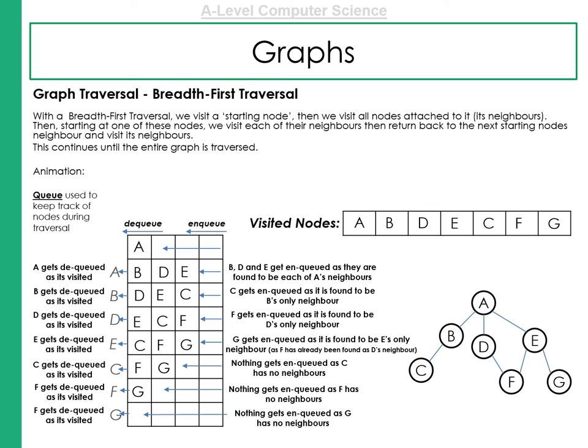Remember, with a queue, it's first in, first out. So the first item, the root node, is A. We visit A. Next up, A, we have a look at its neighbours. So B, D and E go into the queue.